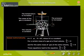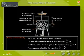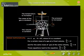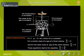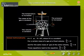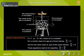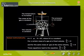For a certain mass of a gas at a fixed volume, P1 by T1 is equal to K, and for the same mass of gas at the same volume, P2 by T2 is equal to K. These equations lead to the conclusion that P1 by T1 is equal to P2 by T2.